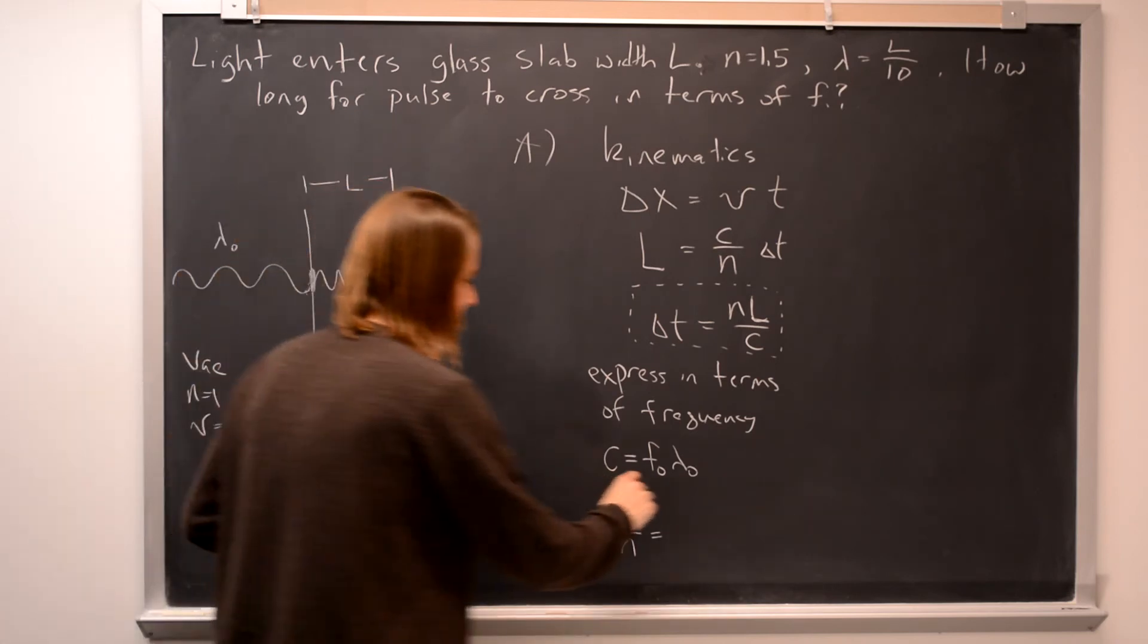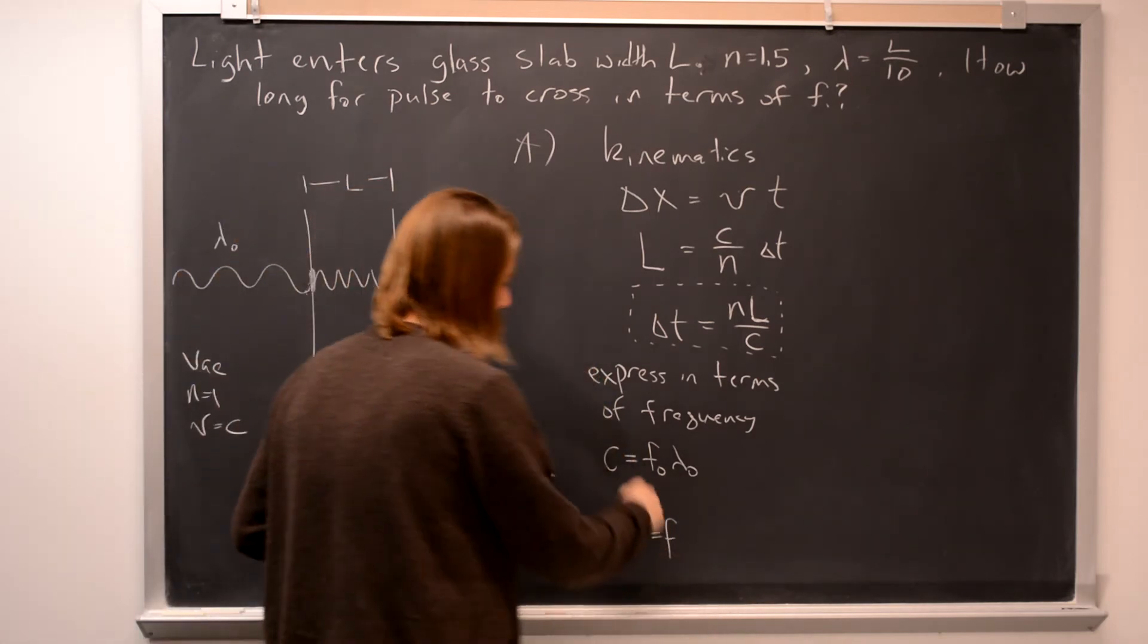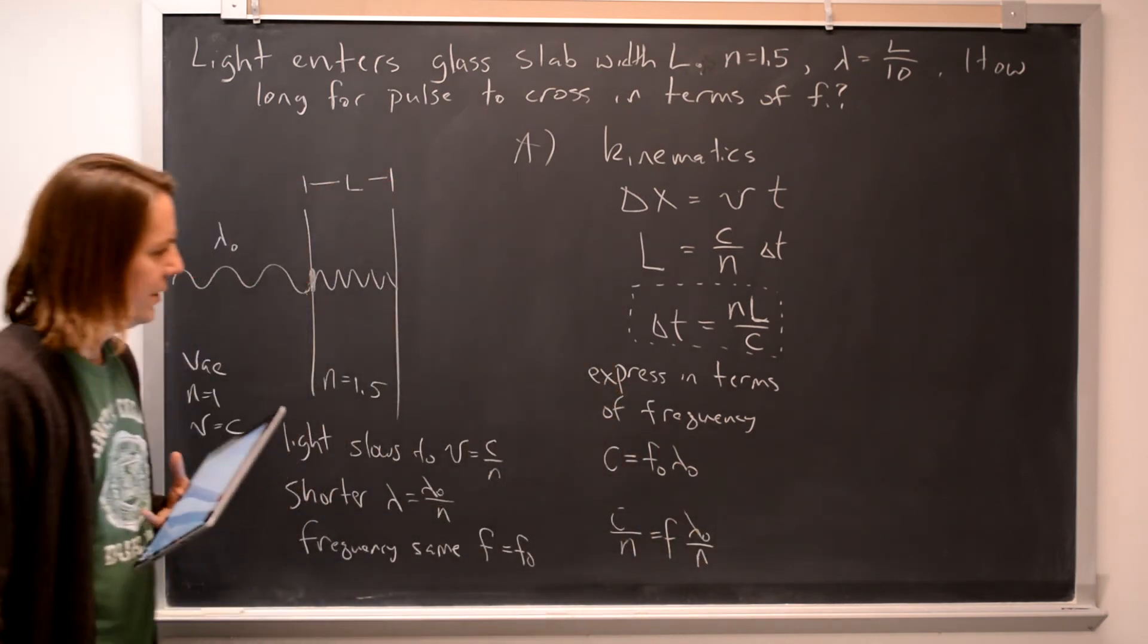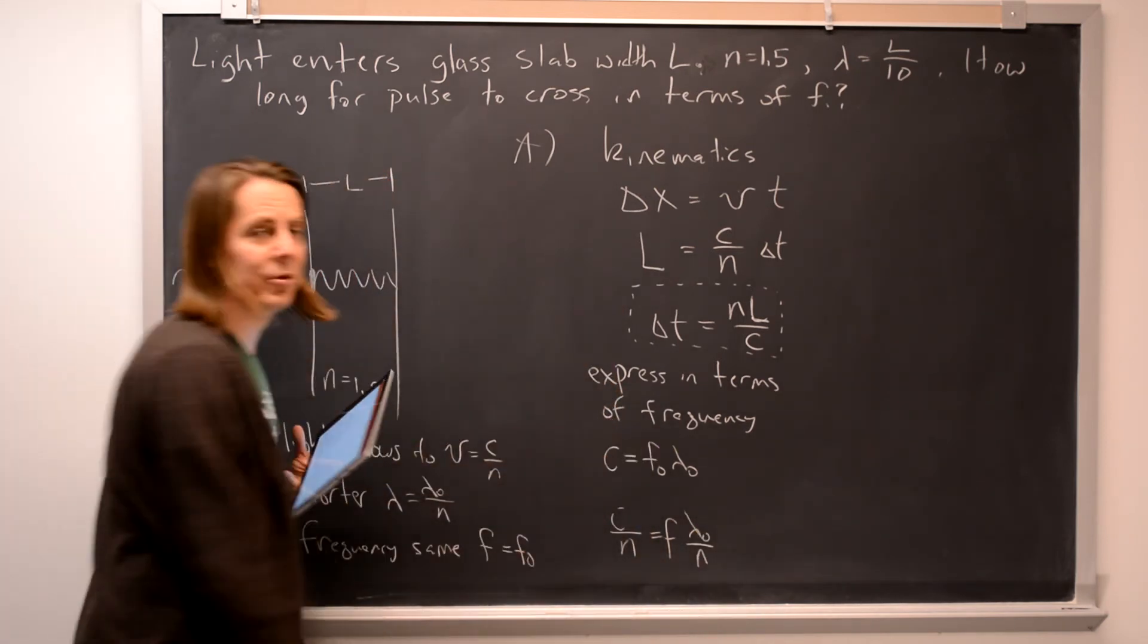that C over N, that speed, equals F. Same frequency, F. What's the wavelength in there? Lambda over N. So you can see that's true. All we do is divide both sides by N.